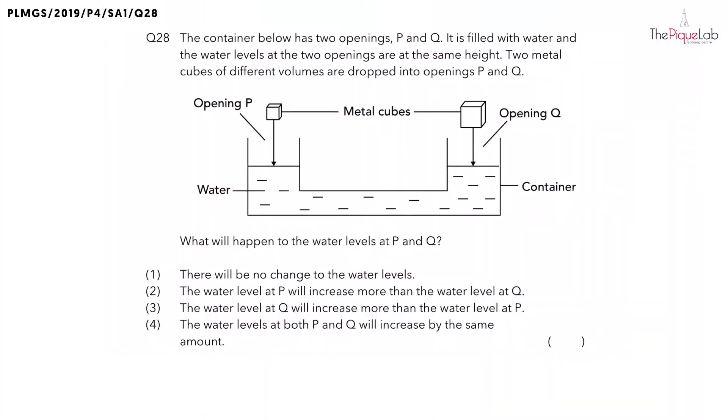So, let's get started. Question 28. The container below has two openings, P and Q. It is filled with water and the water levels at the two openings are at the same height. Two metal cubes of different volumes are dropped into openings P and Q.